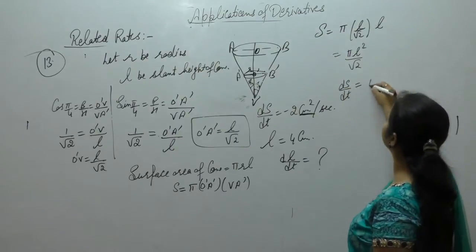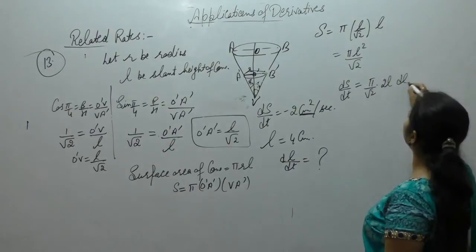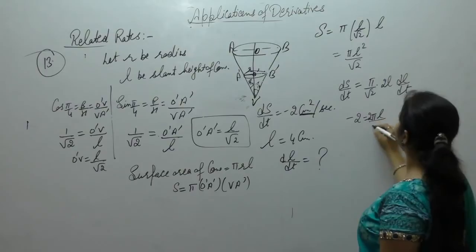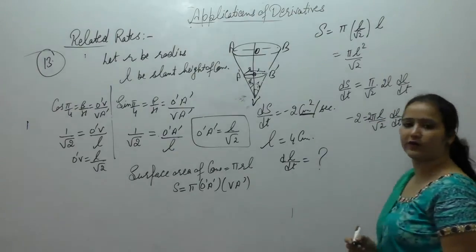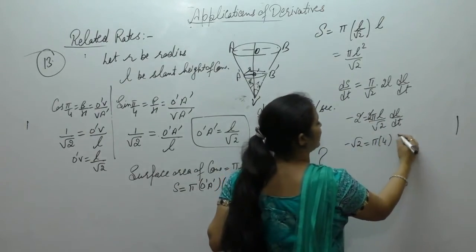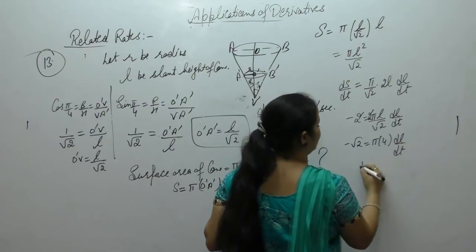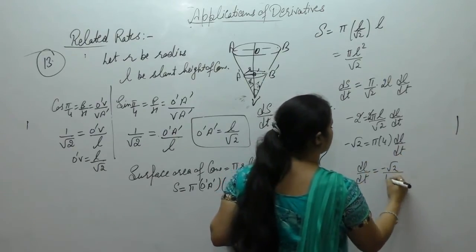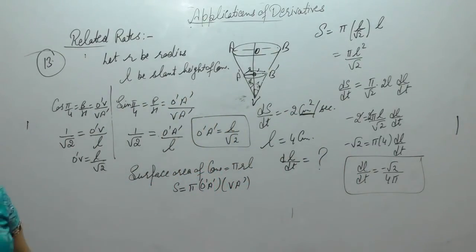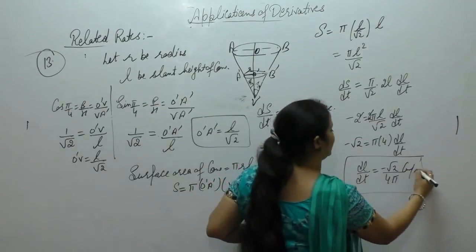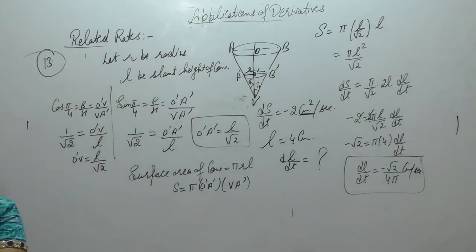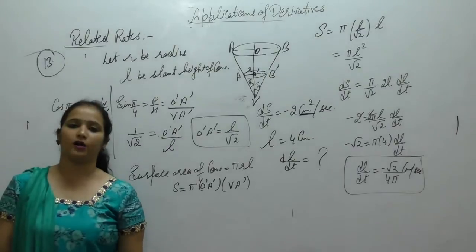Differentiate with respect to time: dS/dt = (π/√2) × 2l × dl/dt. Since dS/dt = −2 cm²/s, we get −2 = √2 π l × dl/dt. We want to find dl/dt when l = 4. So dl/dt = −√2/(4π). The slant height is decreasing at the rate of √2/(4π) cm per second.